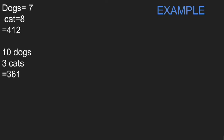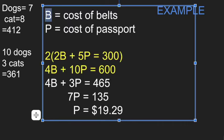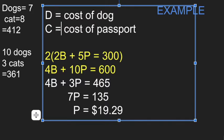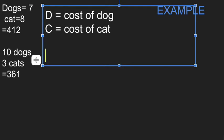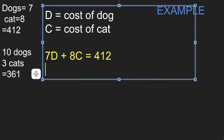So we got D for the cost of a dog and C for the cost of a cat, and we want to create first our set of equations. So 7 dogs, seven times the price of a dog, plus 8 cats, eight times the price of a cat, will cost me $412. These are some cheap pets. If instead I get 10 dogs and 3 cats, that's only going to cost me $361, meaning that cats are more expensive than dogs, I believe.